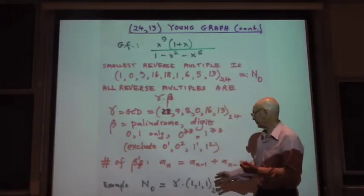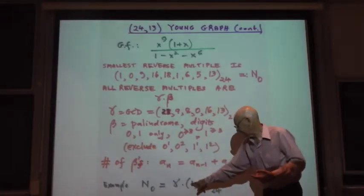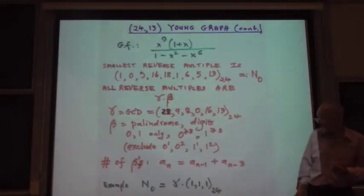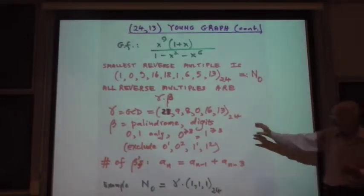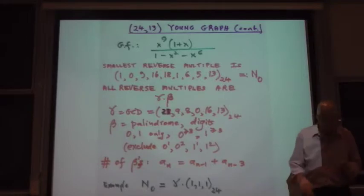And you can easily count how many there are and check the degrees with the thing. And as an example, the smallest reverse multiple is gamma times 111. So 111 satisfies the rules. It's got a run of length three of ones. So it's a legal, it's palindromic. So it would be a solution.